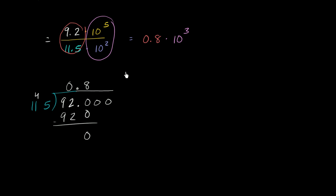Now, are we done? Well, in order to be done, this number right over here needs to be greater than or equal to 1 and less than 10. It is clearly not greater than or equal to 1. So how can we rewrite this as the product of something that is greater than or equal to 1 and less than 10 and some power of 10?